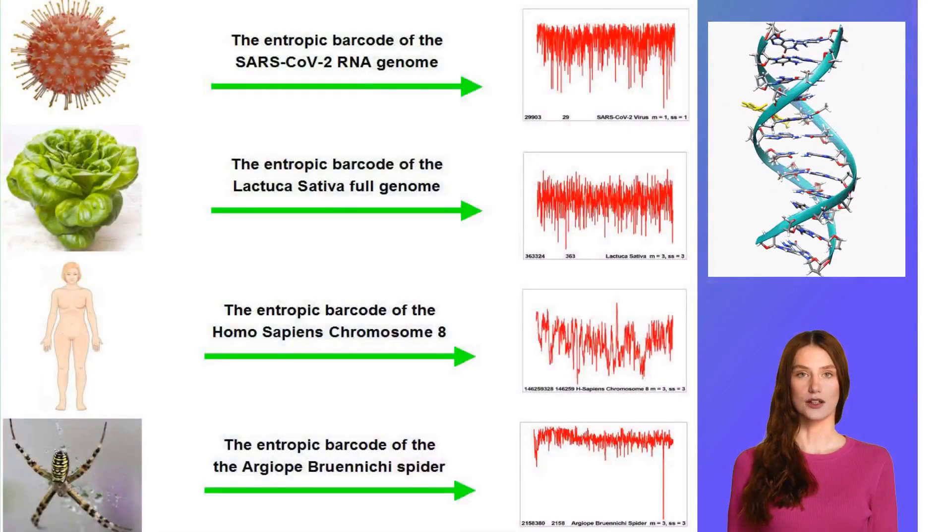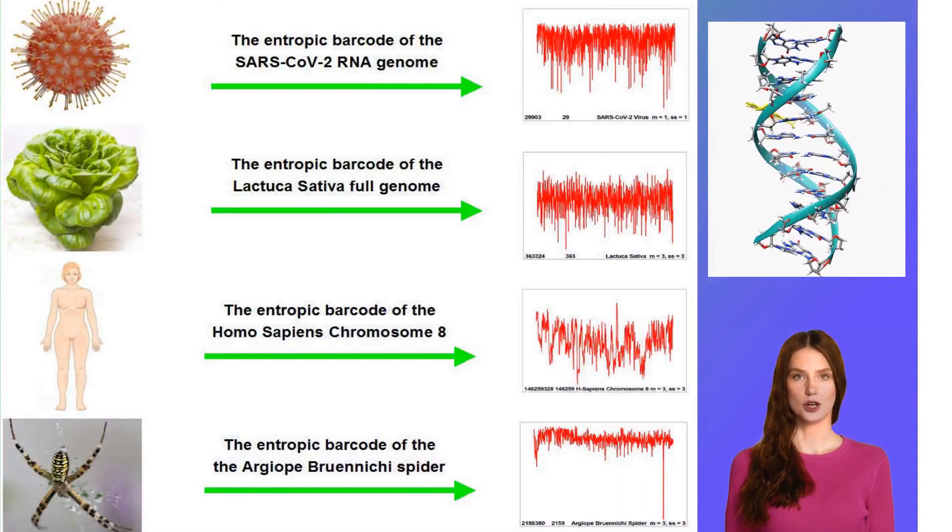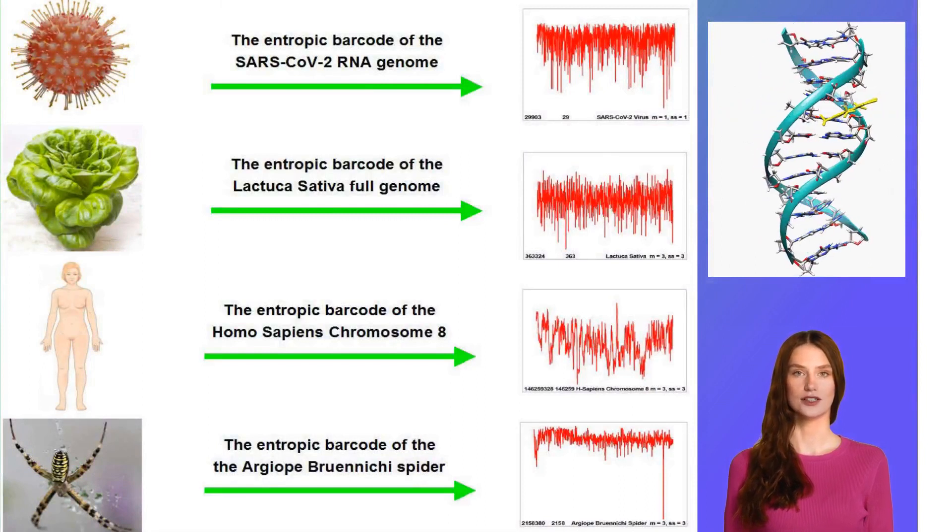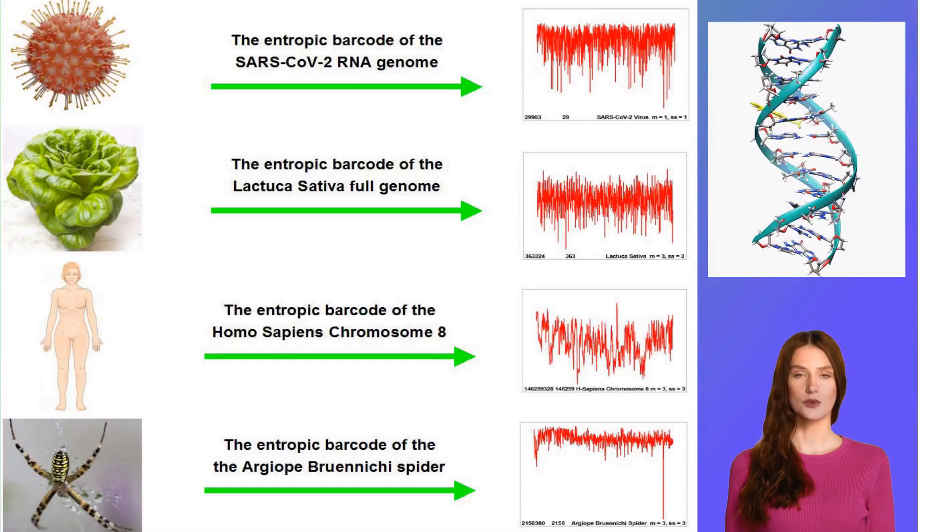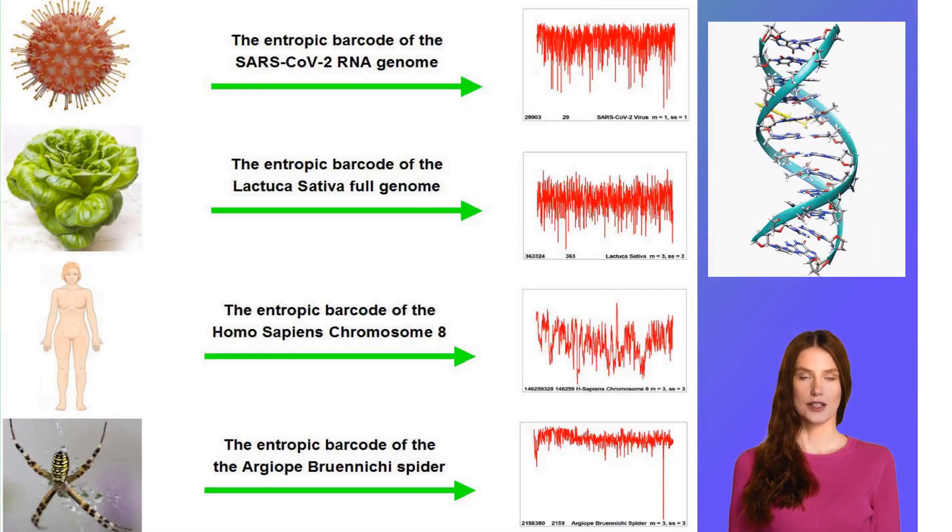Examples of genetic Entropic Barcodes shown here are the Entropic Barcode of the SARS-CoV-2 RNA genome, the Lactuca sativa full genome, the Homo sapiens chromosome 8, and the Argiope bruennichi spider, respectively.